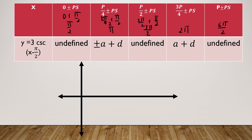Next, we find the values of y. For the first one, we have undefined. For the next, we substitute positive a because the value of a is positive. If a were negative, we would start from negative, then positive. Since a is positive, we have positive a: 3 plus 0, which equals 3. Then negative: negative 3 plus 0, which equals negative 3. So the x values are pi over 2, pi, 3 pi over 2, 2 pi, and 5 pi over 2.